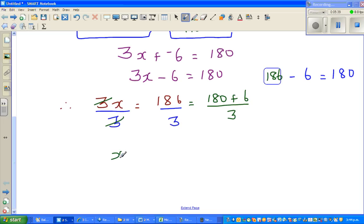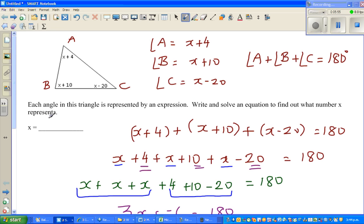So x is equal to 180 divided by 3 plus 6 divided by 3. So you know 180 divided by 3 is 60 plus 2 is 62. So x is 62.